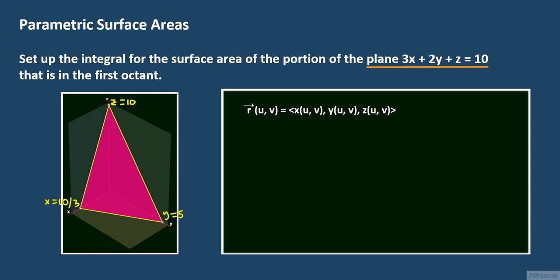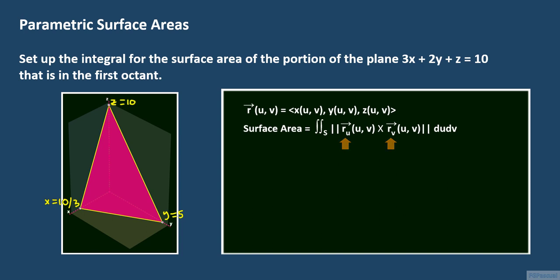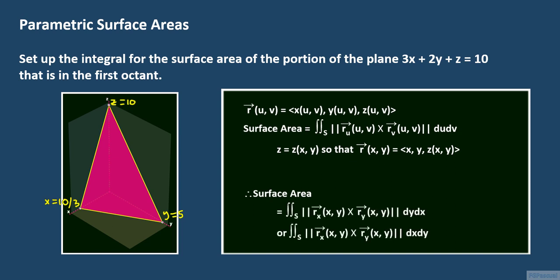If the surface is given parametrically as the vector function r of u, v, where x, y, and z are all functions of u and v, then we can write the surface area as the double integral of the magnitude of the cross product of r sub u and r sub v, integrated with respect to u and v. Suppose we can write z in terms of x and y; then u and v equal x and y respectively, and r of x, y is the vector (x, y, z(x,y)).